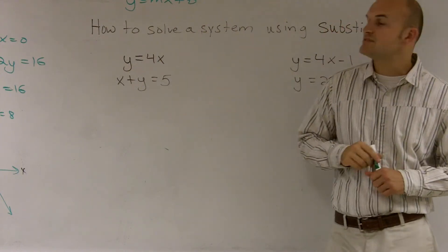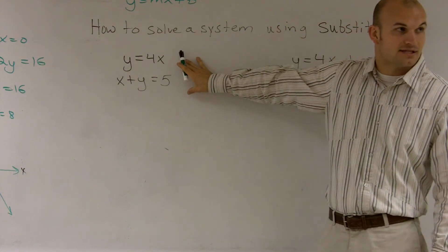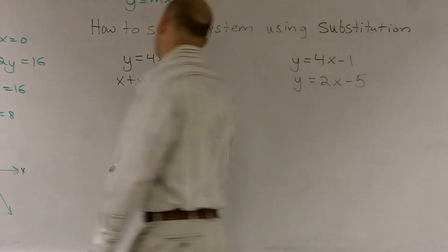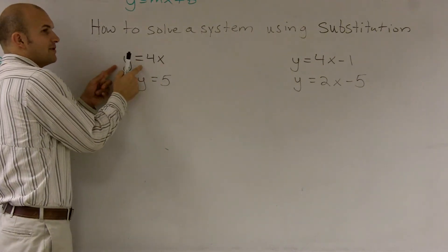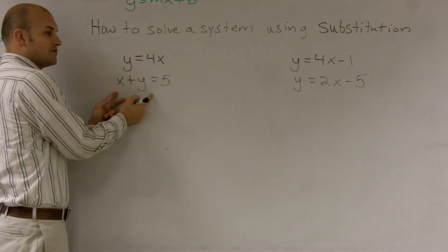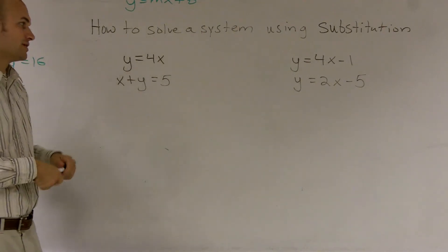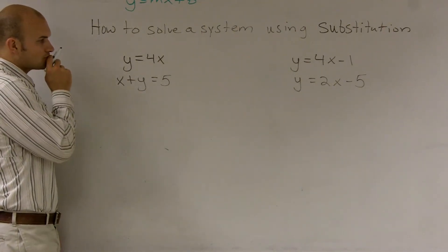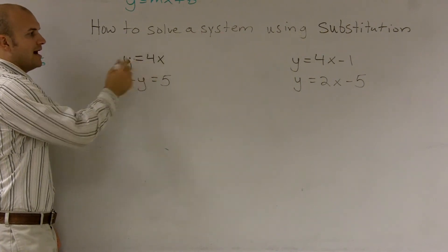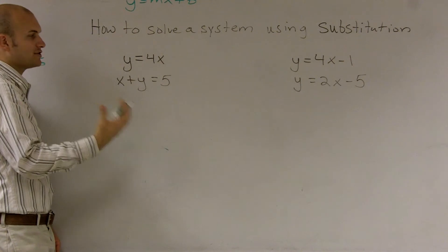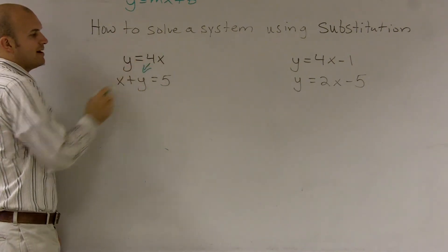So when you're trying to solve systems of equations, what you need to do is plug in. Since we know that if it has to be true for the top equation and it has to be true for the bottom equation, then what we can say is both of them are going to be equal to each other. Rather than writing y is equal to 4x, I can say if at the same point our y's are equal to each other, what I can do is I can put in my 4x into my y.